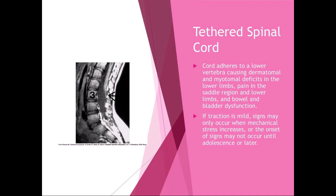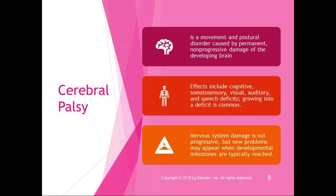With tethered spinal cord, if the traction is mild the signs may only occur when mechanical stress increases, and onset might not occur until adolescence or later — because there must be enough growth to create actual stress on the spinal cord. Cerebral palsy is a movement and postural disorder caused by permanent, non-progressive damage to the developing brain. Whatever damage happened as the brain was developing, it's not getting any worse; children are born with this damage. Effects can include cognitive, somatosensory, visual, auditory, and speech deficits, and growth into deficit is common.